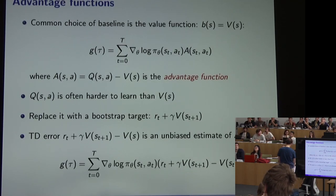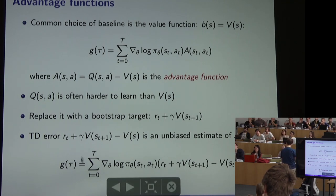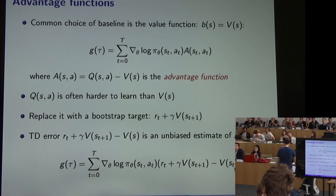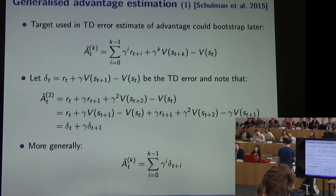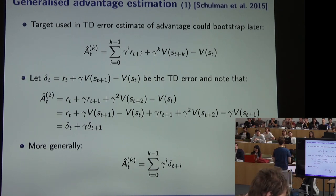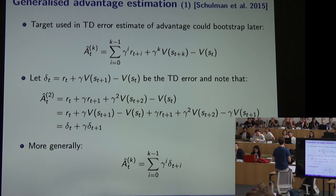This TD-error-based actor-critic is probably the most commonly used policy gradient approach: Q is too hard to learn so we use V, but we still reduce variance with a baseline. When training the critic we can use a variant of TD(lambda), where the lambda parameter for eligibility traces — distinct from the control variate lambda — lets us balance the bias-variance tradeoff.